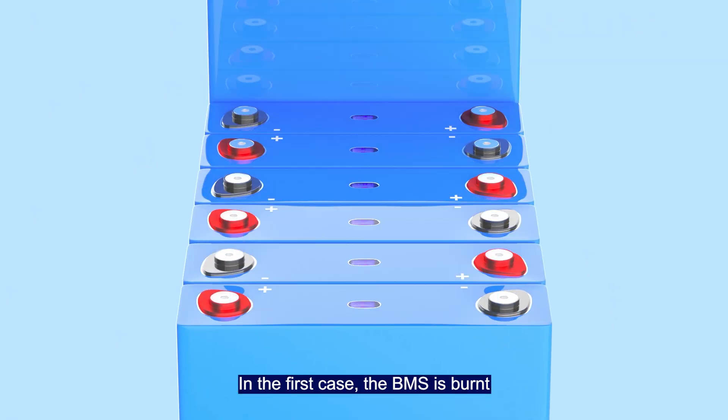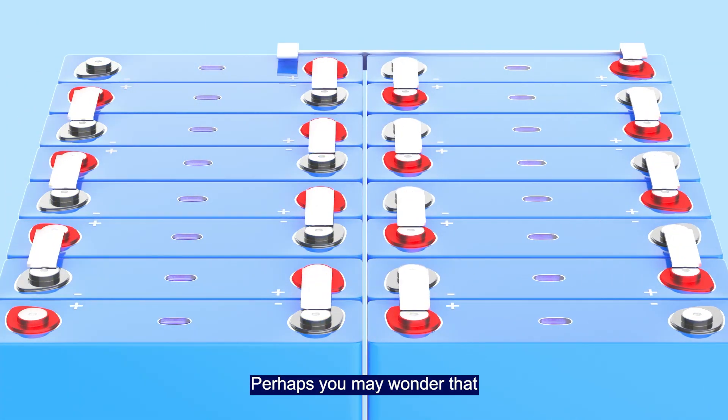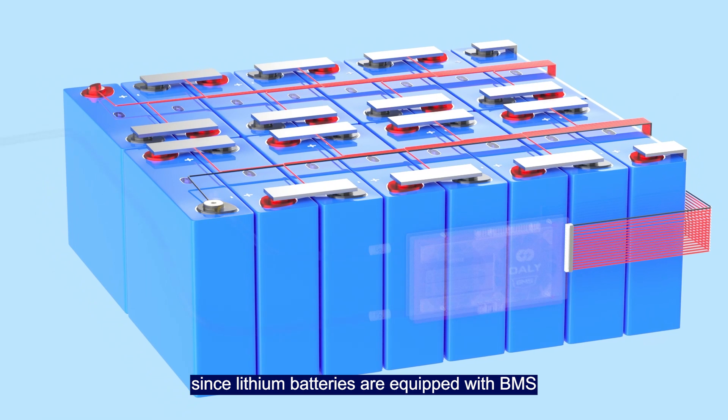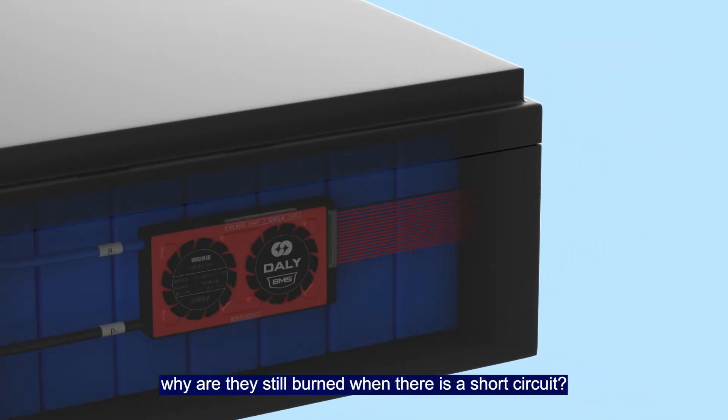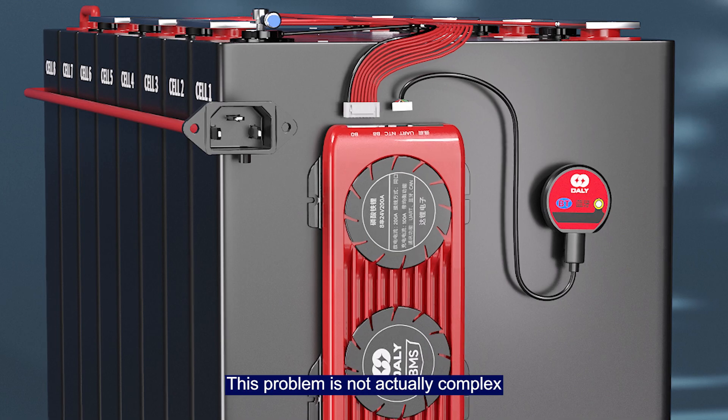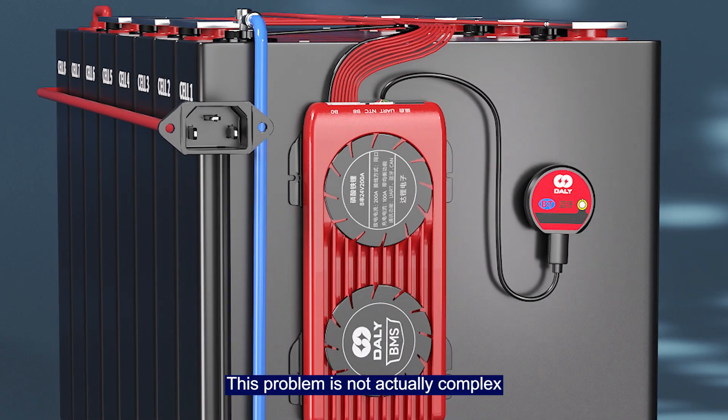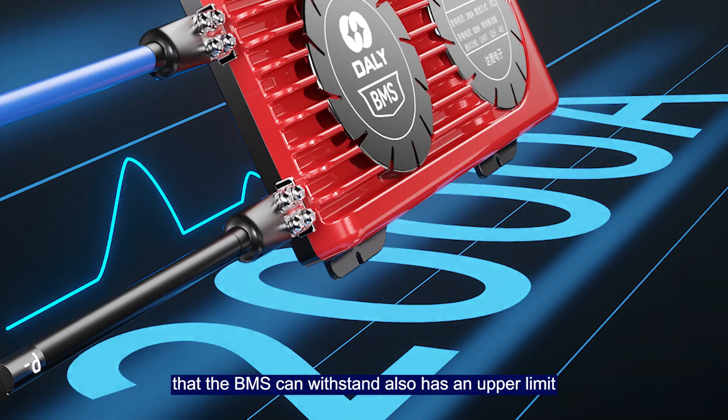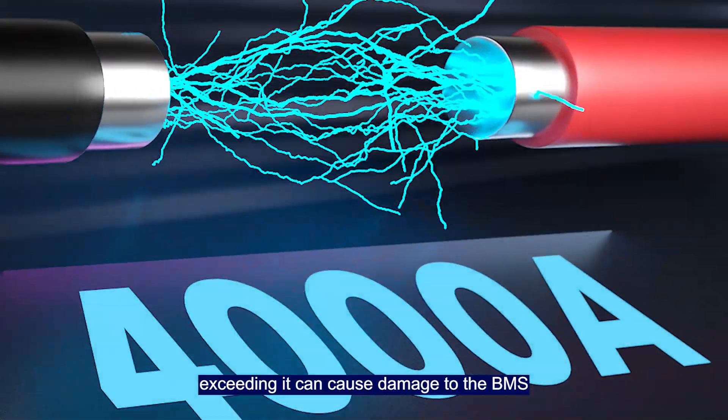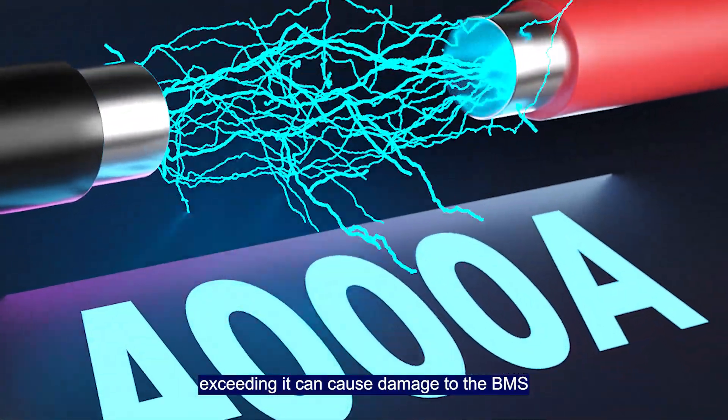In the first case, the BMS is burned. Who hasn't wondered that since lithium batteries are equipped with BMS, which also have short circuit protection functions, why are they still burned when there is a short circuit? This problem is not actually complex, because the short circuit protection current that the BMS can withstand also has an output limit, exceeding it can cause damage to the BMS.